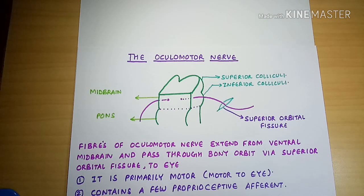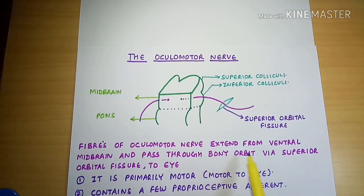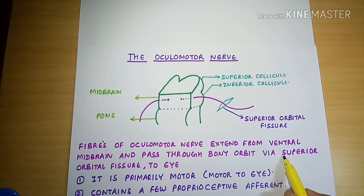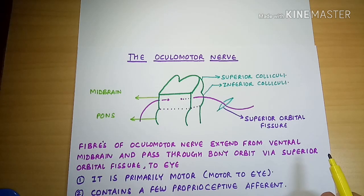The third cranial nerve, the oculomotor nerve, is primarily a motor nerve. It contains a few proprioceptive afferent fibers also. The fibers of the oculomotor nerve extend from the ventral midbrain and pass through the bony orbit via the superior orbital fissure to the eye, supplying four of the six eye muscles.